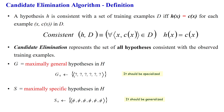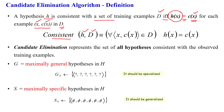The Candidate Elimination Algorithm uses formal notation. A hypothesis H is consistent with a set of training examples D if and only if the hypothesis output H(Xi) equals the target concept C(Xi) for each corresponding sample Xi. This is represented as the set of all pairs of samples X and their corresponding target concept C(X) in dataset D, satisfying H(Xi) = C(Xi).